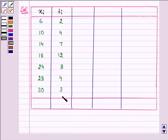Now to find out the mean firstly we need to multiply xi with fi to obtain fi xi. So it will be 6 into 2 that is equal to 12, 10 into 4, 40.